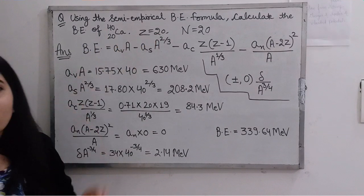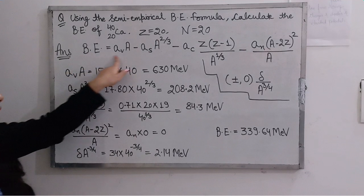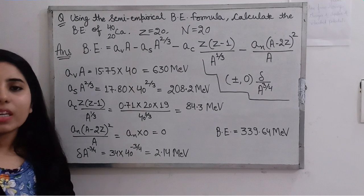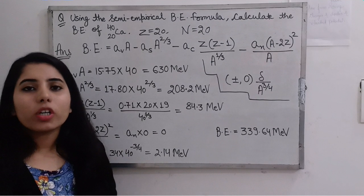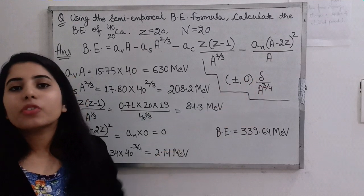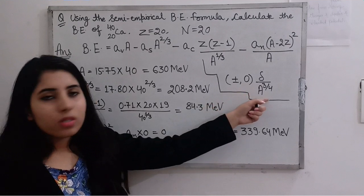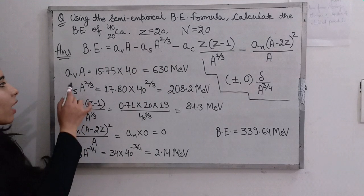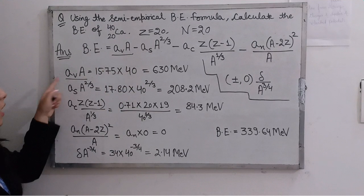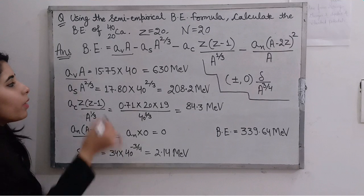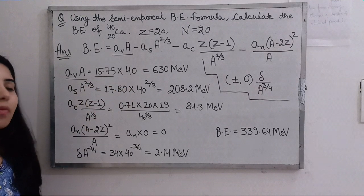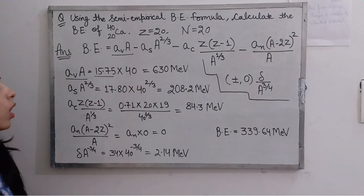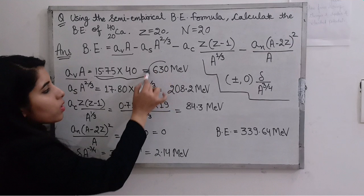Now we know the binding energy expression. For the volume energy term, a_v times A, we put a_v equal to 15.75 and A equal to 40. When you solve this, you will get approximately 630 MeV. After that we solve the surface energy term. Again A is 40, so we put 40 for A, and the constant a_s value is 17.8. You can solve the remaining energy expressions similarly using the constant coefficient values from the binding energy formula.